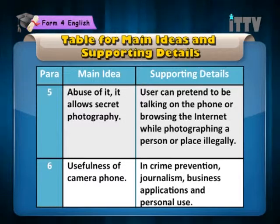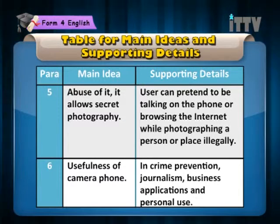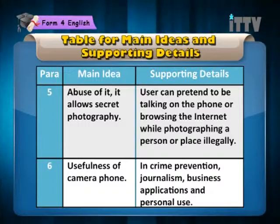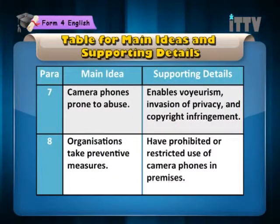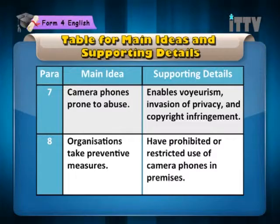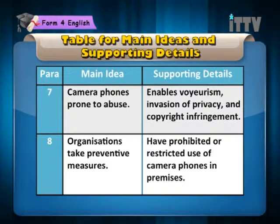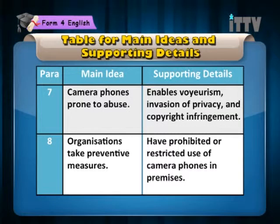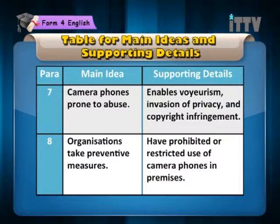Paragraph 6: Main idea — usefulness of camera phone. Supporting details — in crime prevention, journalism, business applications and personal use. Paragraph 7: Main idea — camera phones prone to abuse. Supporting details — enables voyeurism, invasion of privacy and copyright infringement. Paragraph 8: Main idea — organisations take preventive measures. Supporting details — have prohibited or restricted use of camera phones in premises.